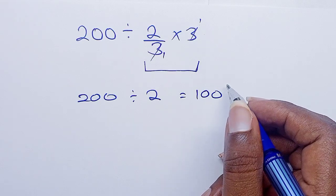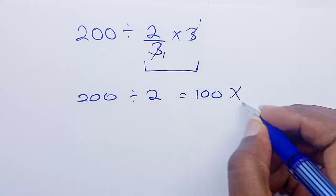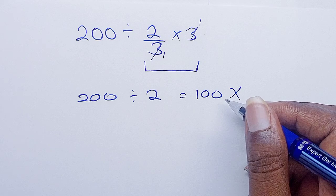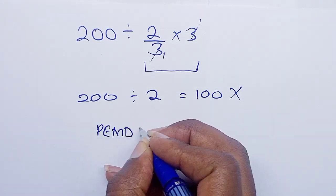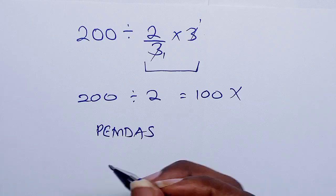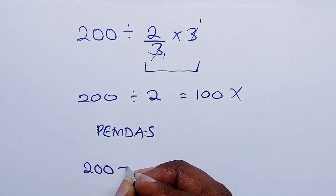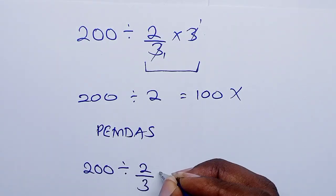If you got 100 as your answer, this is wrong. It's not correct because you cannot follow the order of operations. PEMDAS, it's supposed to follow PEMDAS. So we shall have 200 divided by 2 over 3 times 3.